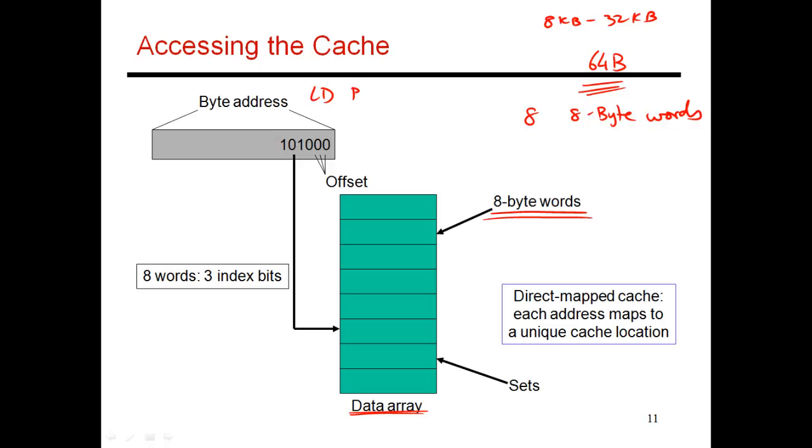Now when I issue a load, which says bring something into R1 from an address, that address is what I'm showing in this gray box over here, and it could be, let's say, a 40-bit address. The last three bits in this address specify exactly which byte I'm referring to in this 8-byte word. So based on the address, maybe I'm fetching this block over here. But when I bring in the block, it's actually 8 different bytes that I'm bringing in.